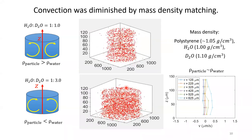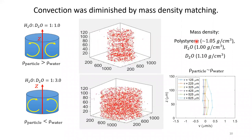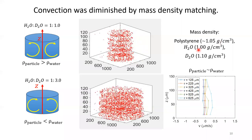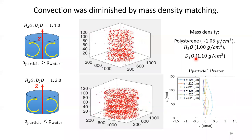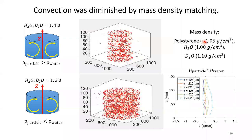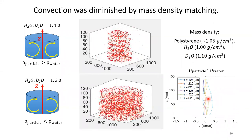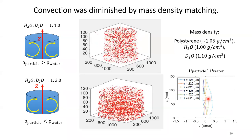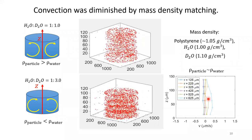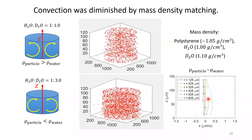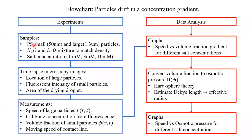To match the mass density, I use polystyrene particles, which have a density around 1.05. I mix normal water H₂O and heavy water D₂O to match the density, since polystyrene density is between those two liquids. After adjusting the H₂O/D₂O ratio, I achieve a perfect density match. In the z direction, the flow is uniform — no convection. The experiment uses polystyrene particles of different sizes mixed uniformly in water. We can also change the salt concentration to adjust the slope of the gradient.